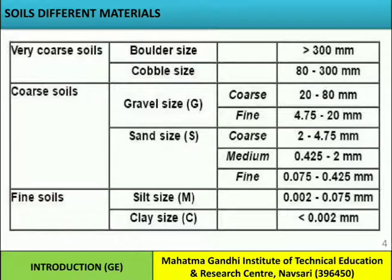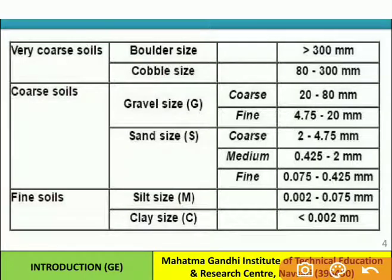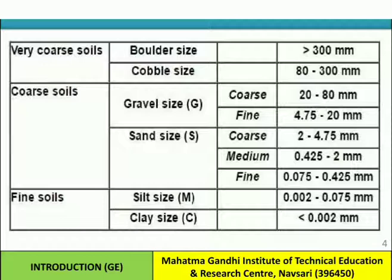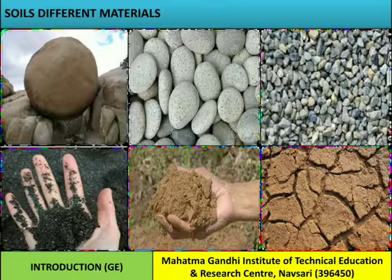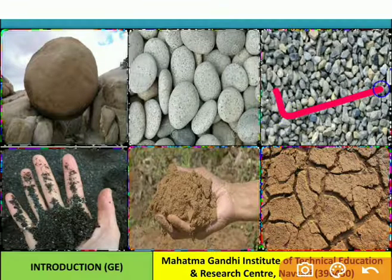The second category is coarse soil, subdivided into gravel size and sand size. Gravel size is further subdivided into fine and coarse. If the soil is in the range of 4.75 to 20 mm, it is known as fine gravel size, and if it is in the range of 20 to 80 mm, it is known as coarse gravel size.